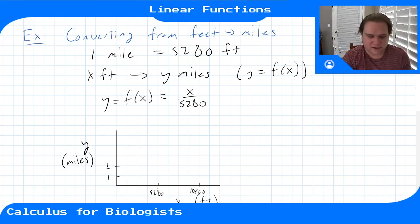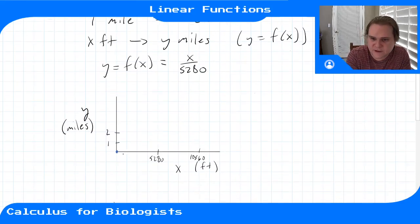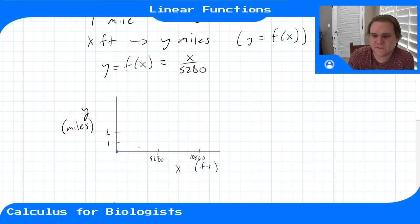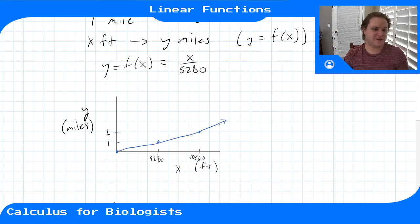What does this look like when we plot it? When x is zero, y is also zero. Zero feet is the same as zero miles. But once you get up to 5280 feet on the x-axis, you finally reach one mile. Then you don't get to the second mile until we've gone another 5280 feet. There are 5280 feet in a mile, 10,560 feet in two miles. It keeps going like this, so we can connect a straight line.